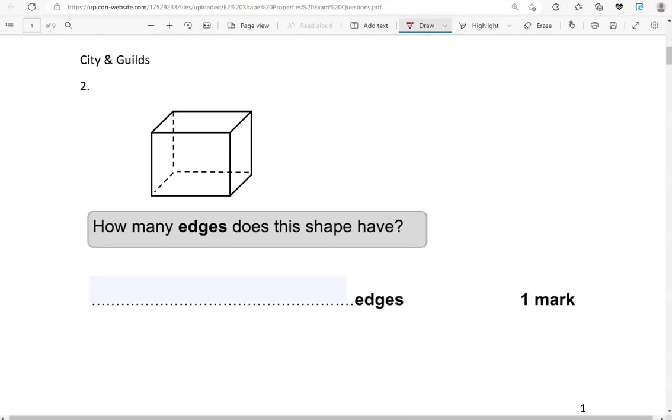How many edges does this shape have? So this is a cube, and it has the same number of edges that a cuboid has. But nonetheless, I'll show you here.